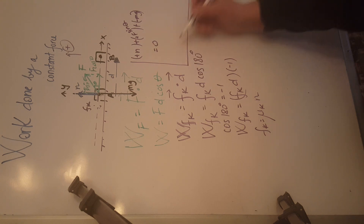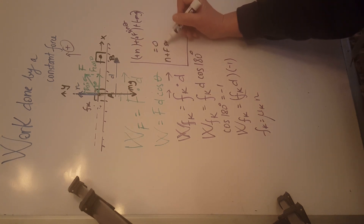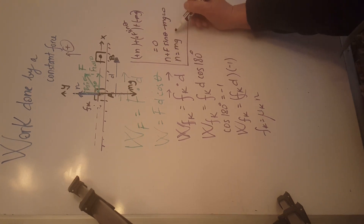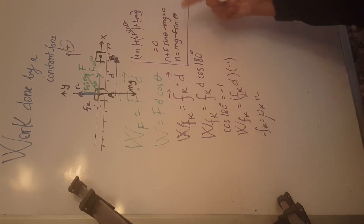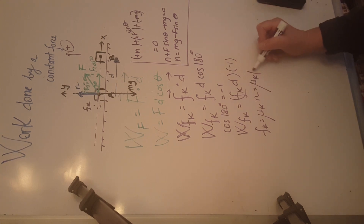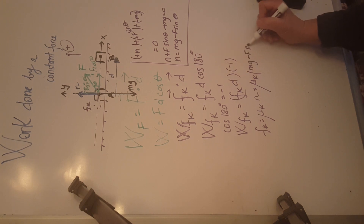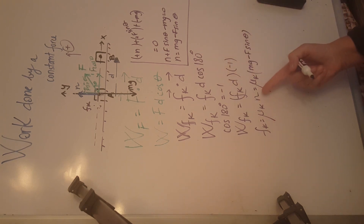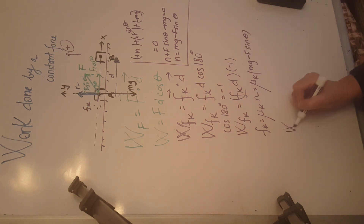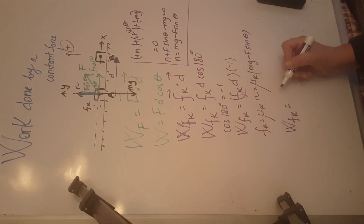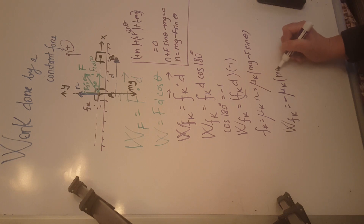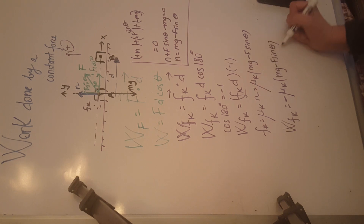Simplifying, n plus F sine theta minus mg equals 0, which gives us n equals mg minus F sine theta. Plugging this into the friction expression, the force of friction in magnitude equals mu_k times (mg minus F sine theta). Multiplying by the displacement magnitude and by negative 1 gives the work done by friction: negative mu_k times (mg minus F sine theta) times d.